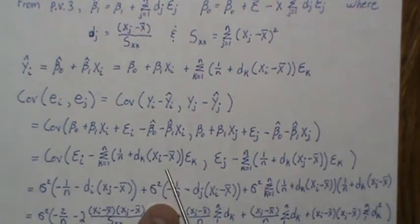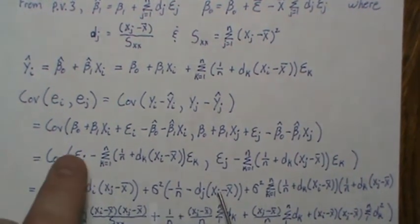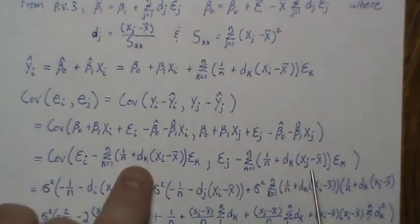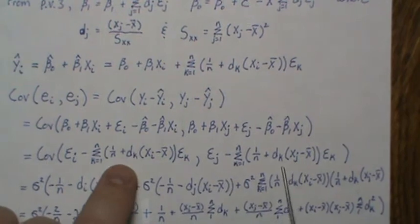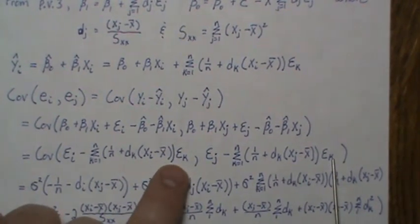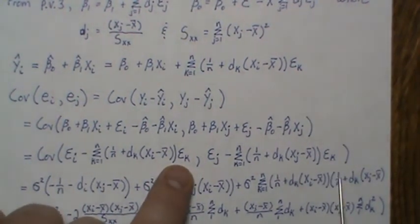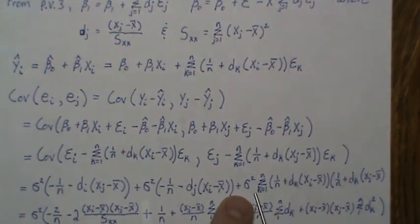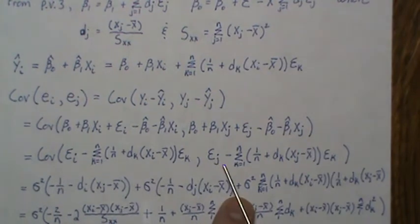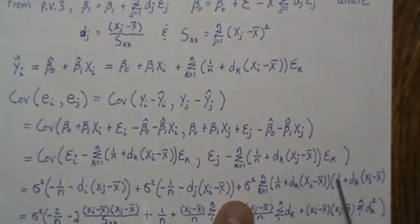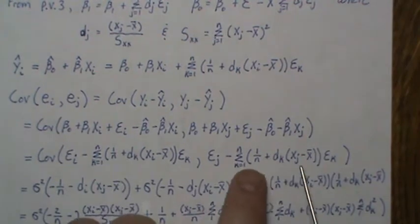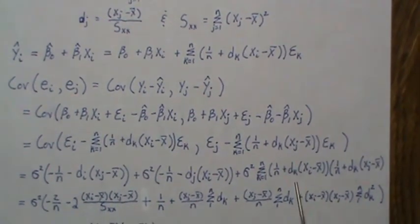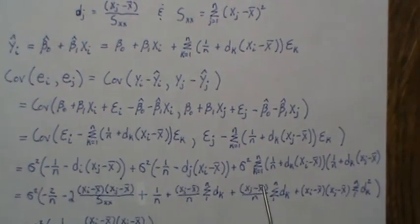Notice the i index appears from one term and the j index from the other. The double sum: whenever indices differ it's zero, so only matching indices contribute, giving a single sum from 1 to n. The σ² comes out as a constant, and we're left with a double product.